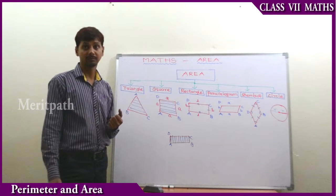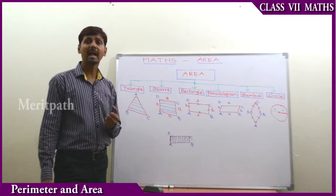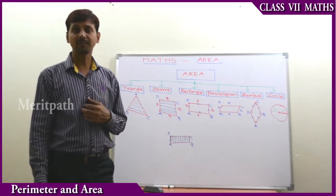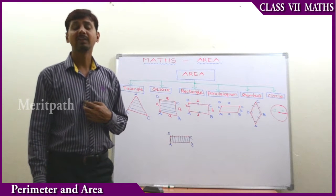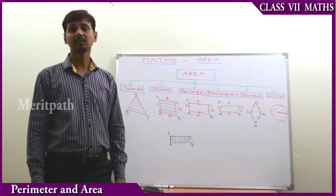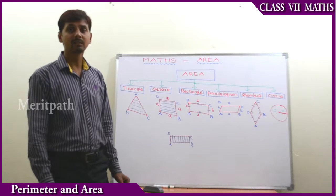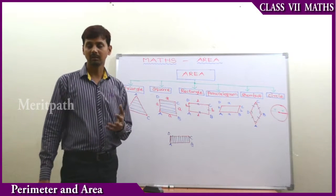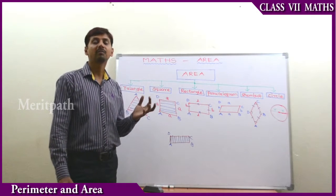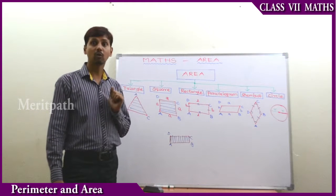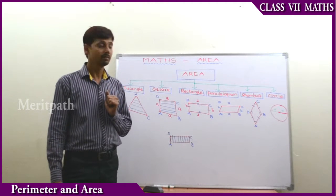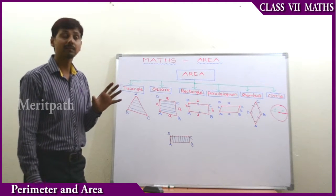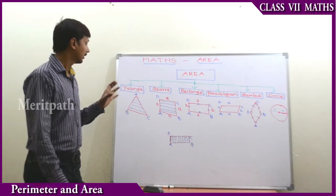The two-dimensional figures include rhombus and circle. For irregular figures, to find the area we have learned in previous classes using square units on graph paper. Now we will focus on regular figures such as triangle.